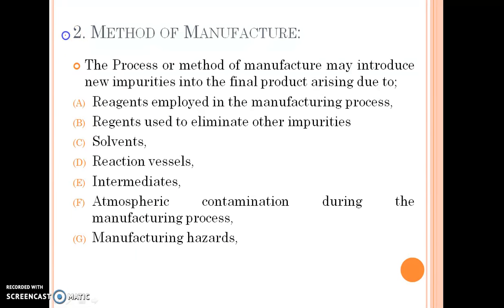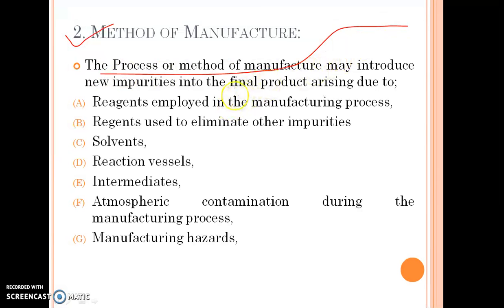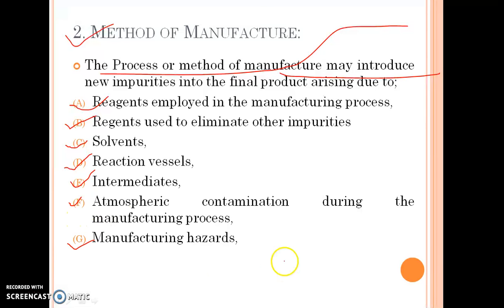Second is method of manufacture — that means the process by which products are synthesized. In that method it also leads to impurity. The process or method of manufacture may introduce new impurities into the final products arising due to reagents employed in the manufacturing process, reagents used to eliminate other impurities, solvents, reaction vessels, intermediates, atmospheric contamination during the manufacturing process, and manufacturing hazards.